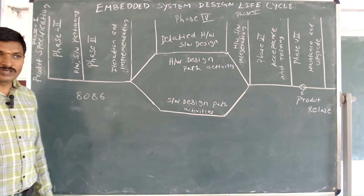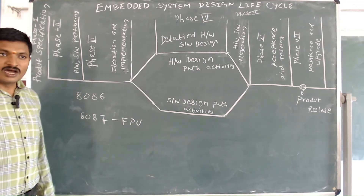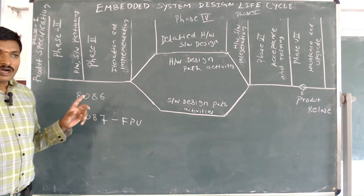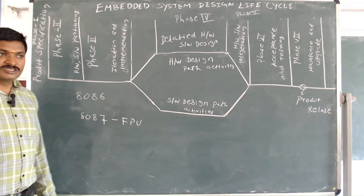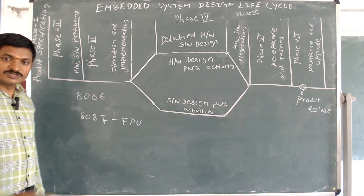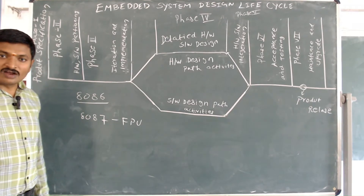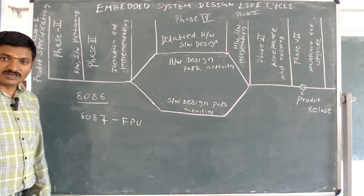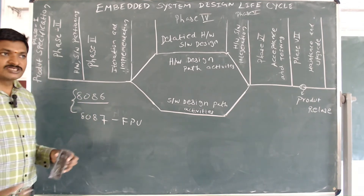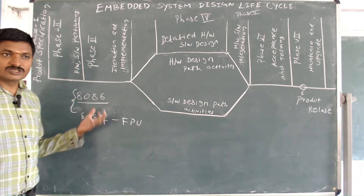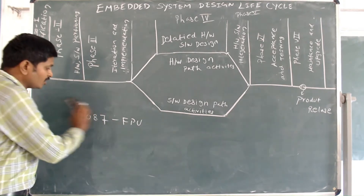In case you want to execute floating point operations at the hardware level, you need to use the 8087 processor, which has floating point units available. If execution speed is required — meaning your application must execute within a specific time constraint — you should prefer the 8087. If time and speed are not constraints but cost is, you can prefer the 8086 processor. This is the example of hardware software partitioning. Remember: hardware execution is faster than software execution.